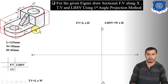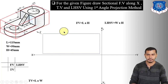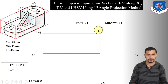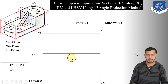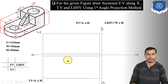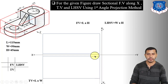Now let us start drawing the front view, top view, and left-hand side view of the cuboid. Observing from the X direction, the front view of the cuboid will be a rectangle having length 115 mm and height 45 mm. Draw a rectangle showing the front view of the cuboid. Then project the length from the front view, measure the width vertically, and draw the rectangle showing the top view of the cuboid having length 115 mm and width 50 mm.